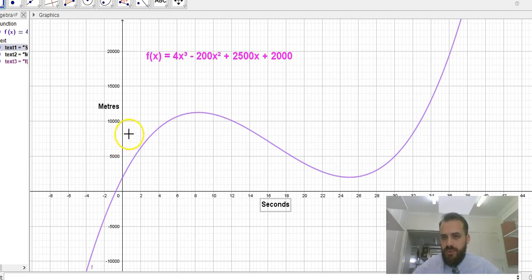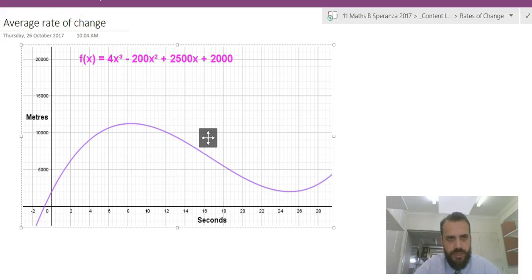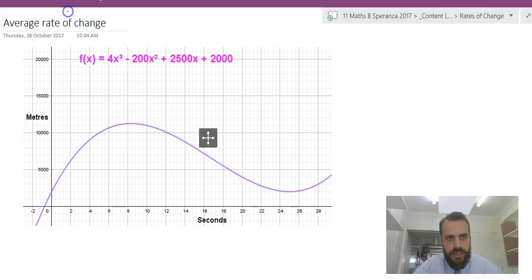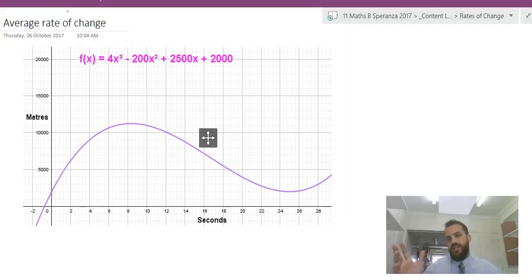So first thing we're going to do is start looking at average rates of change. That's the average change in the plane's height for every second. So let's look at the average rate of change of the plane's height between time 2 seconds and 6 seconds.